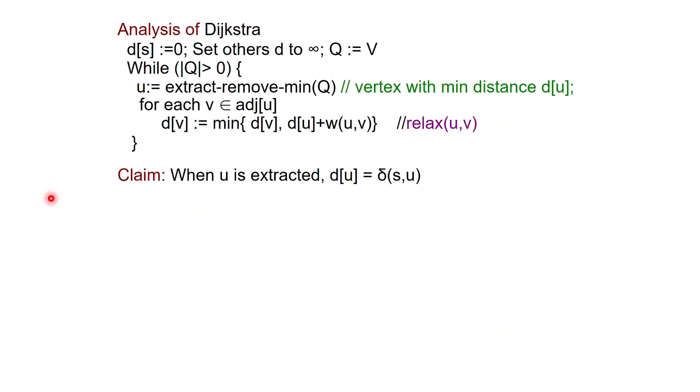Why is Dijkstra's algorithm correct? The claim that we make is that when you extract U from the queue, then the value D of U will be equal to the true distance delta S to U in the graph.